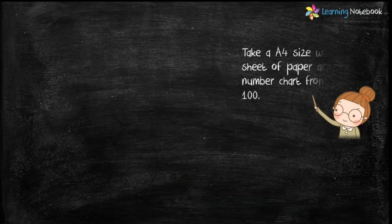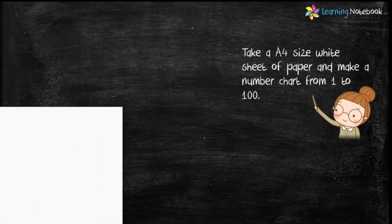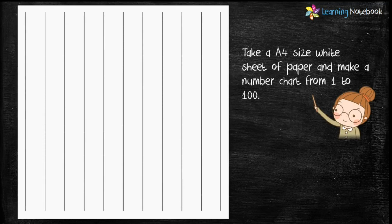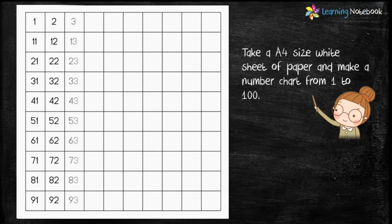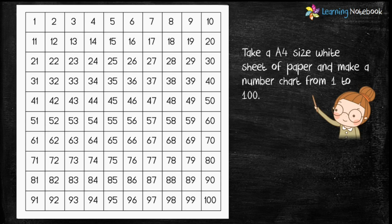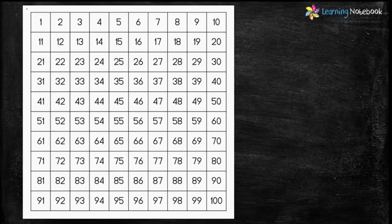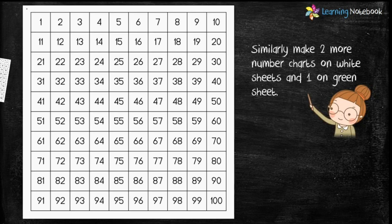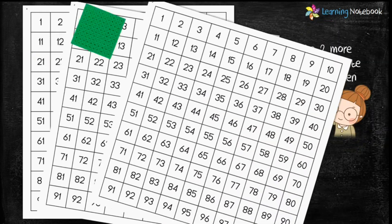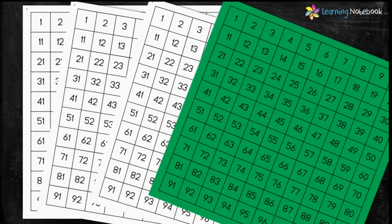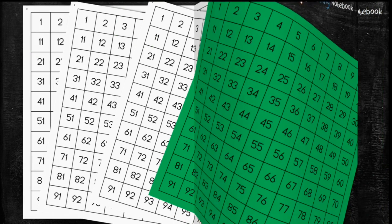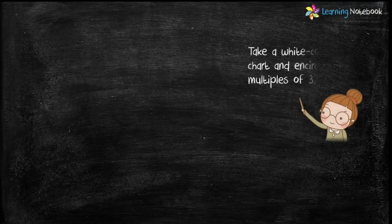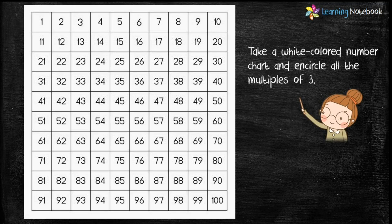Now take an A4 size white sheet of paper and make a number chart on it from 1 to 100, as shown here. Similarly, make the number charts on the remaining white sheets and the green sheet. In total we have to make number charts on 4 sheets.